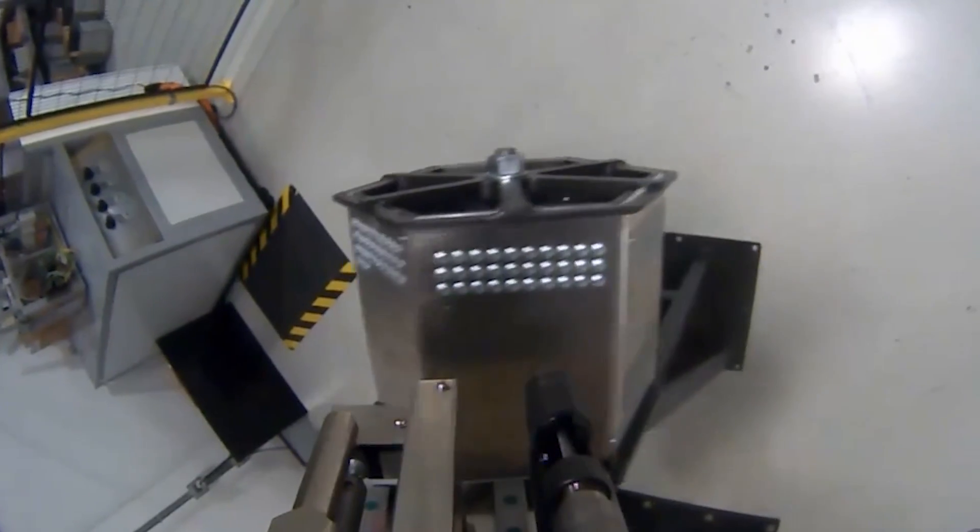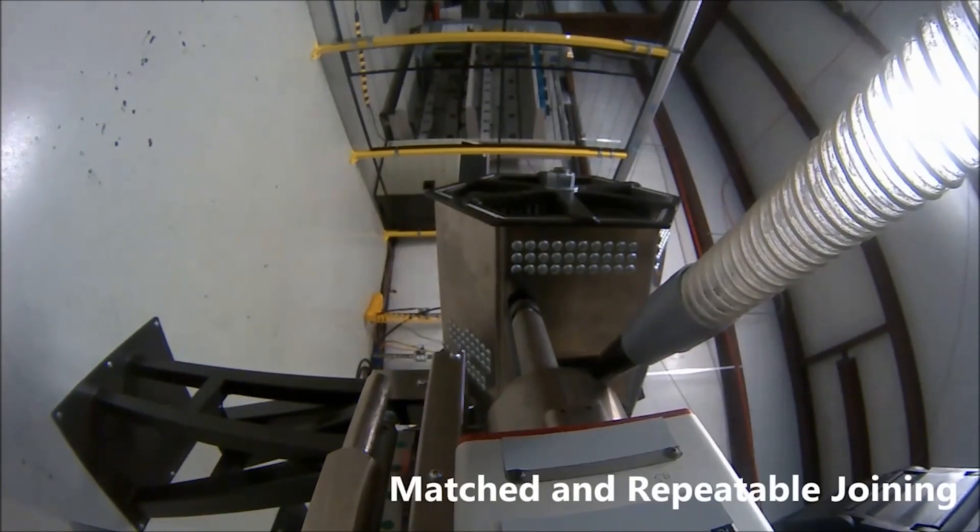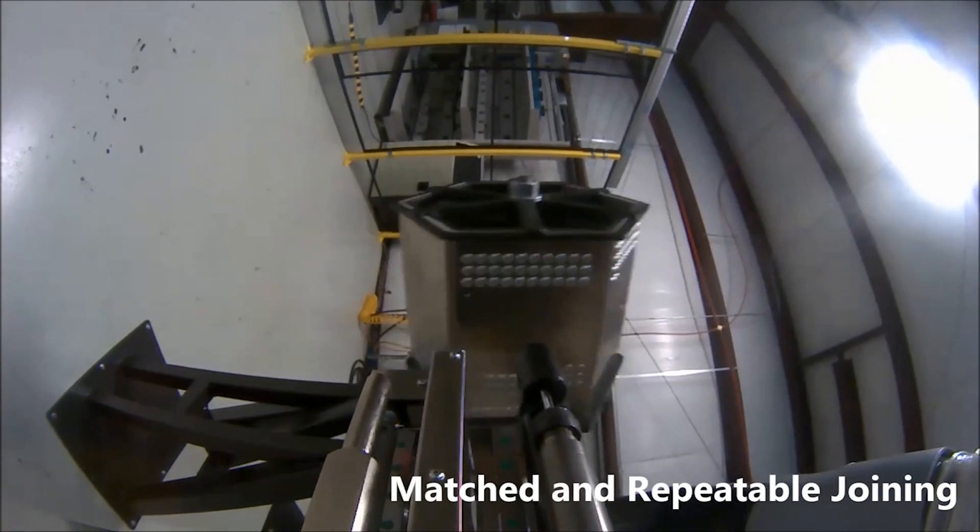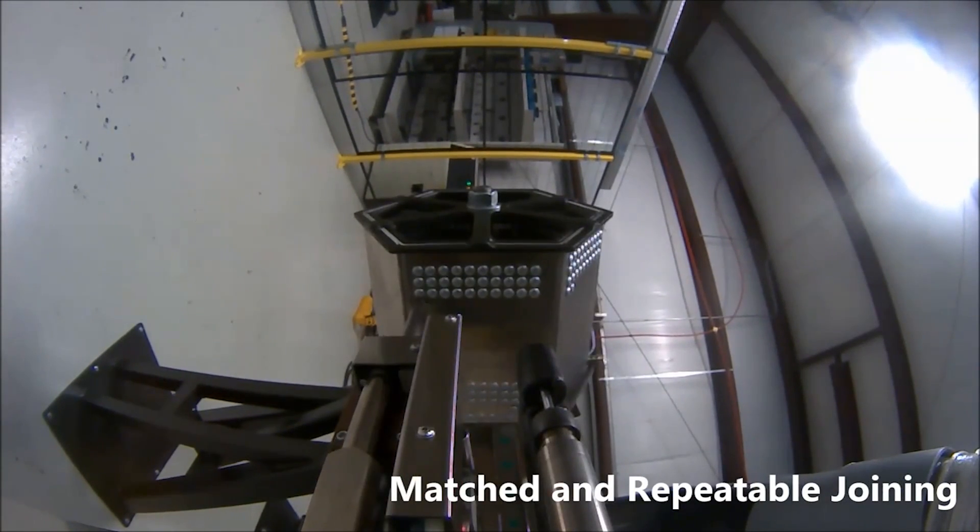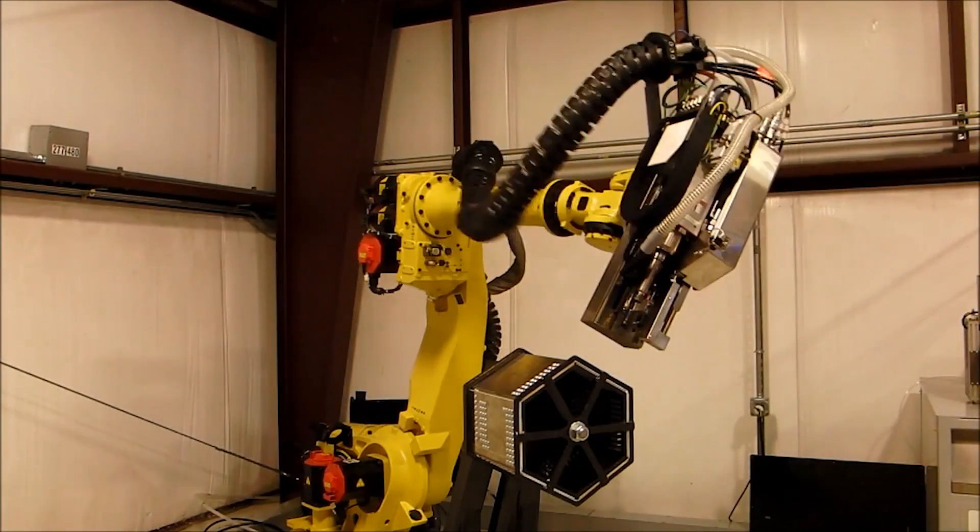The Robo-Rivet System is the only tool specifically designed for high-volume, high-speed placement of structural blind fasteners found in automotive, aerospace, and other demanding transportation sectors.